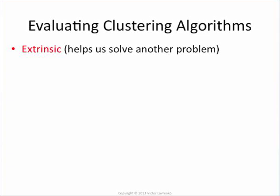There are two ways of evaluating clustering algorithms: extrinsic ways and intrinsic ways. Intrinsic is basically measuring whether the clustering is good in and of itself, and extrinsic is trying to measure whether the clustering is useful for something else.